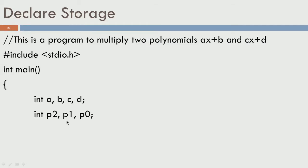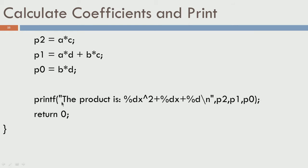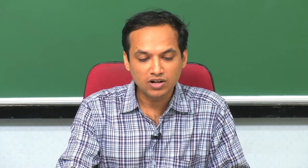Then we have the declarations for a, b, c, d, p2, p1, and p0, followed by a series of printf and scanf operations to read from the user, perform the operations, and print the result. I already showed you the execution. What I want to drive at now is to take a close look at the program and see some of the nitty-gritty details involved.